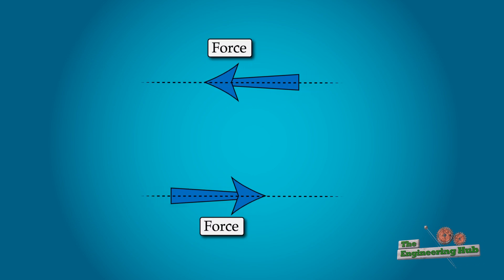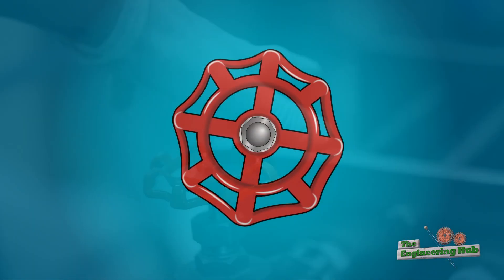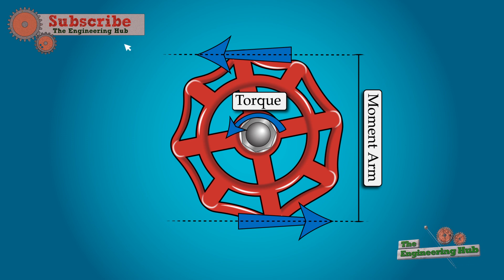Bending moments simply represent two equal forces separated by a distance and acting in opposite directions. Think of a globe valve. In order to open it, you apply an equal and opposite force separated by a distance. This is actually a torque, but for the time being, we can pretend that torques and bending moments are the same thing.